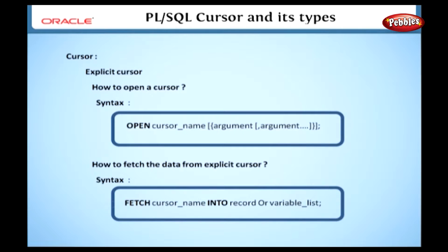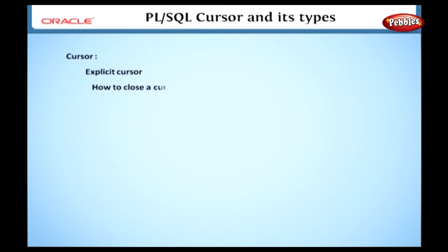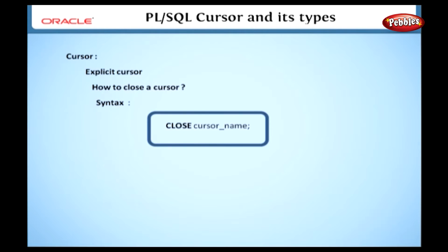A FETCH statement is used to fetch data from a cursor to a local variable. To retrieve all records from the result set, every row must be fetched to the local variable. The syntax is: FETCH CURSOR_NAME INTO RECORD_OR_VARIABLE_LIST. FETCH and INTO are keywords. CURSOR NAME is the name of the cursor as declared and opened. RECORD OR VARIABLE LIST specifies the local variables where we want to store data from the cursor.